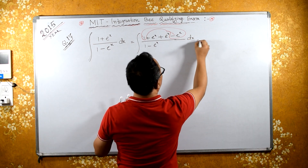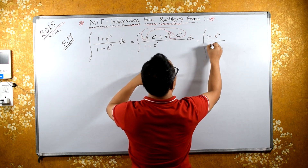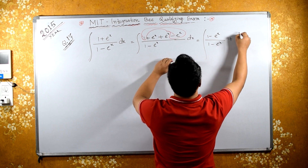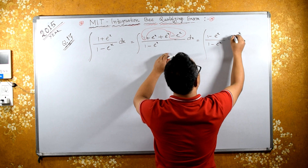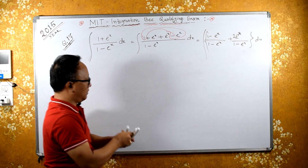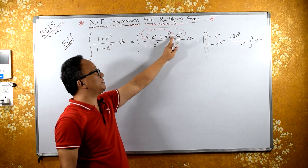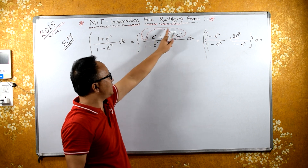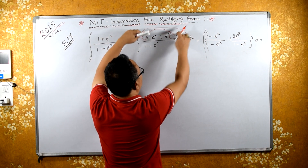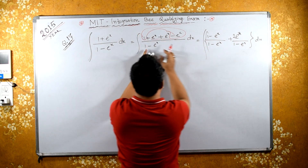Now, this equals — I can write it as: I will combine 1 minus eˣ upon 1 minus eˣ — that part cancels to 1. And the remaining part is eˣ plus eˣ, which is 2eˣ, upon 1 minus eˣ. So combining, I get 1 plus 2eˣ upon 1 minus eˣ, where each term is divided by 1 minus eˣ.